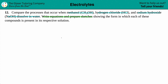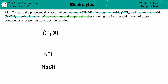The first thing I'm going to list out here is that we have CH3OH, then we have HCl, and then we have NaOH. The first thing we should do is identify what types of compounds these are.